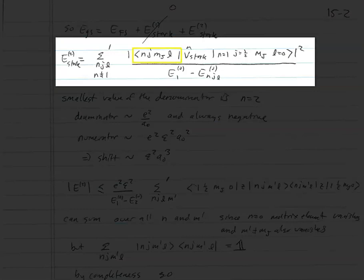We simply have to take the overlap of some arbitrary state |n, j, mj, l⟩ with n ≥ 2, with our ground state |n=1, j=1/2, mj, l=0⟩, with V_Stark sandwiched in between. We take the modulus squared and divide by E1⁰ minus E_{n,j,l}⁰. In general, this summation is hard to calculate — you'd have to compute every matrix element, find which ones are non-zero, and sum over those non-zero terms, which can be quite challenging.